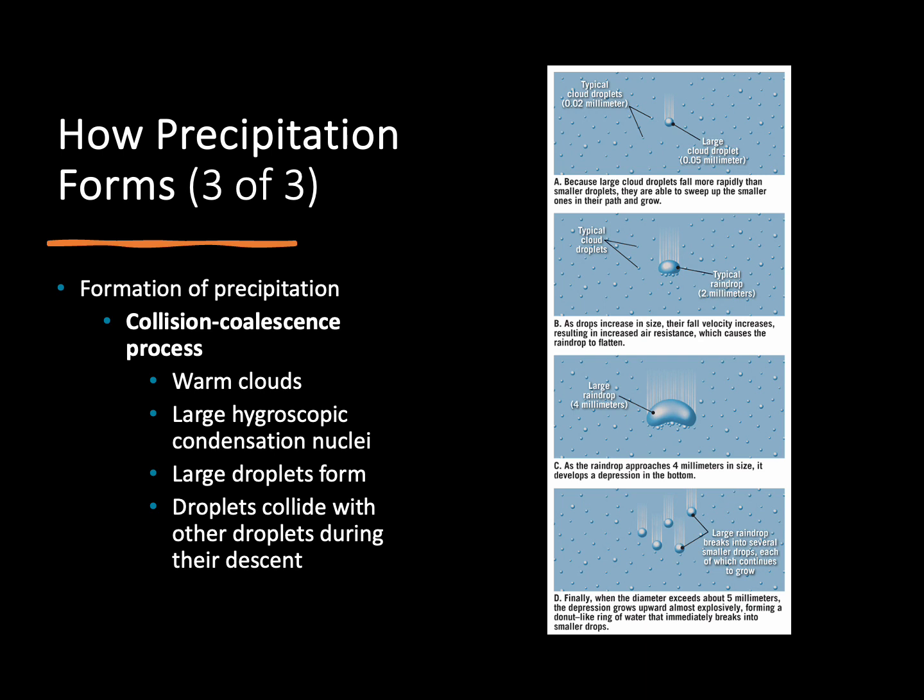You might have noticed if you drive that the raindrops that fall on our windshield don't range a whole lot in size. We might have a smaller mist versus a larger raindrop in a major storm but I've never had a raindrop the size of my car fall. The reason why we have raindrops that are mostly the same size are all due to this collision coalescence process. It's going to narrow down the size of raindrops as they fall out of the cloud.